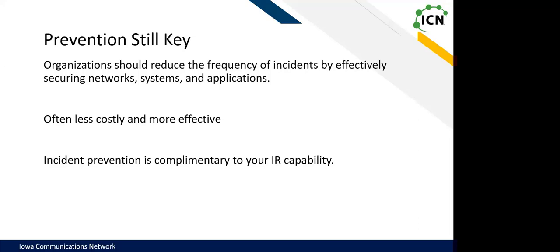Prevention is still key. Organizations should reduce incidents as much as possible by effectively securing networks, systems, and applications. Periodic risk assessments of systems and applications can help you determine what risks are posed by what you have versus the common threats and vulnerabilities specific to your environment. That should include prioritizing risks and making sure they can be mitigated, transferred, or accepted until controls are in place to reach an acceptable level of risk for the business.